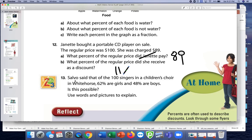And the next one, Salvo said that of 100 singers in the children's choir in Whitehorse, 62% are girls and 48% are boys. Is this possible? Explain. I want you to say yes or no. Is this possible? I can hear you saying no. Very good.